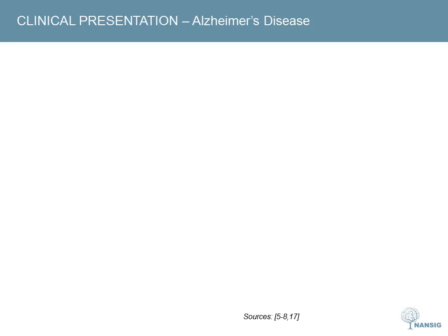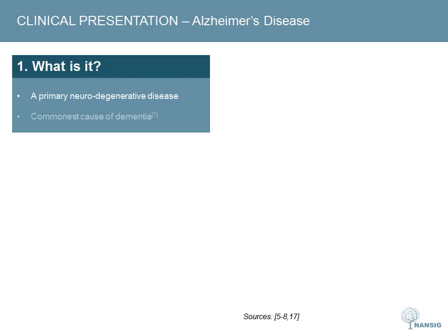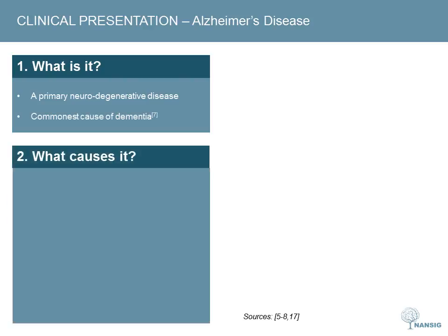We'll briefly go through a few of these causes of dementia, starting with Alzheimer's disease. Alzheimer's disease is a primary neurodegenerative disease and the commonest cause of dementia. We aren't really sure what initial triggers cause it to develop, but we do know that genetics are important. Around 15% of cases are thought to be familial.